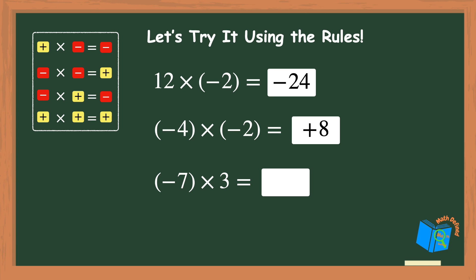This last problem is negative 7 times positive 3. Again, a negative number times a positive one always results in a negative answer. So the answer to this last problem is negative 21.